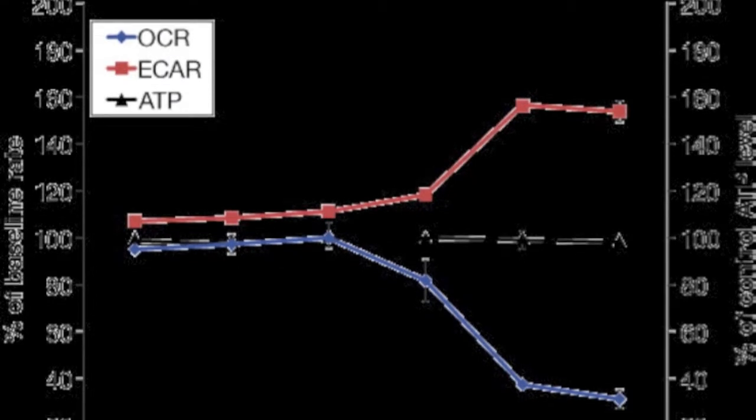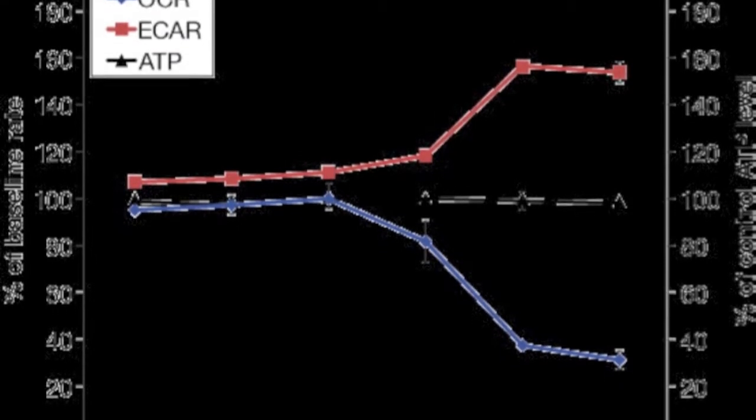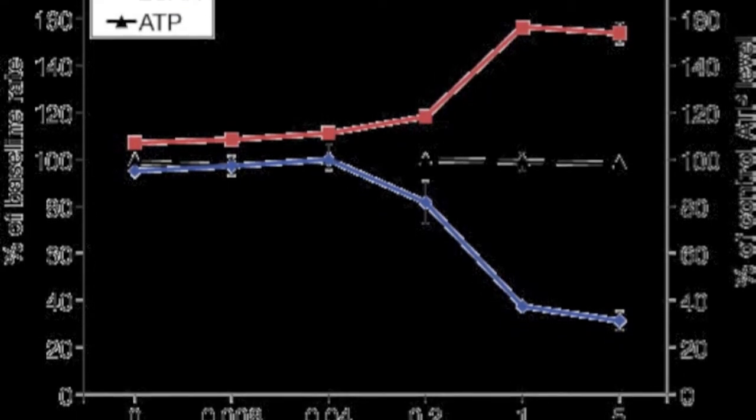In the presence of increasing doses of oligomycin, the cellular respiration rate declined in cells while glycolysis increased.